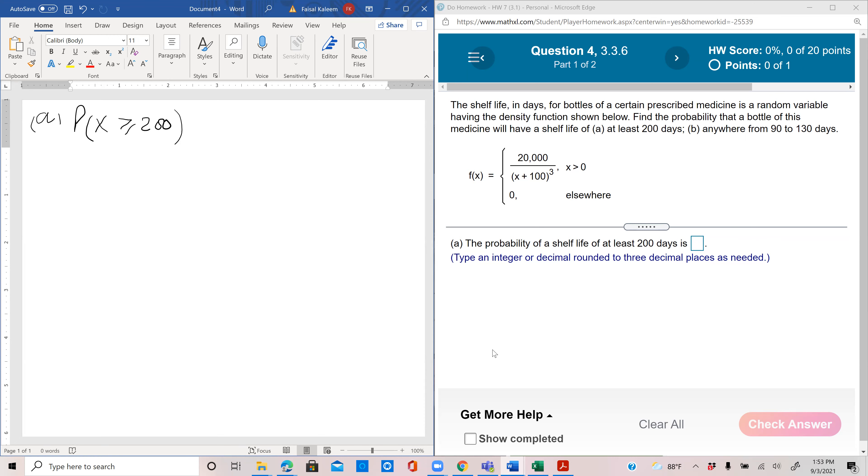It would mean the integral from 200 to infinity of f of x. In general, probability x is greater than a would be the integral from a to infinity of the density function. The probability function in case of a continuous variable is called the density function.